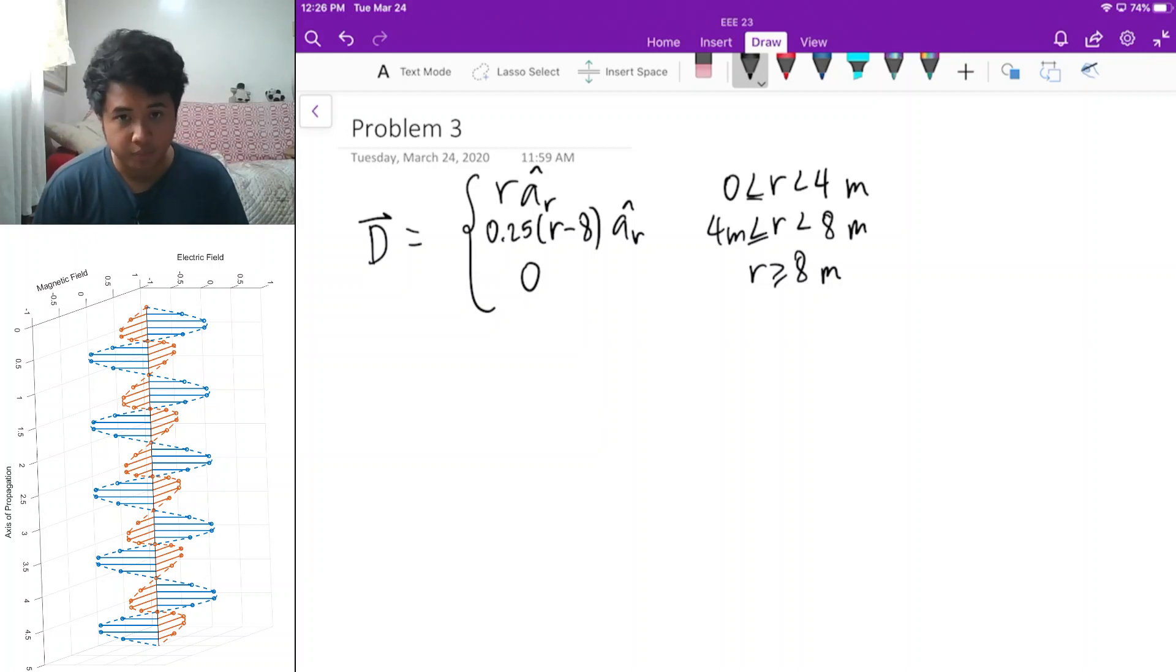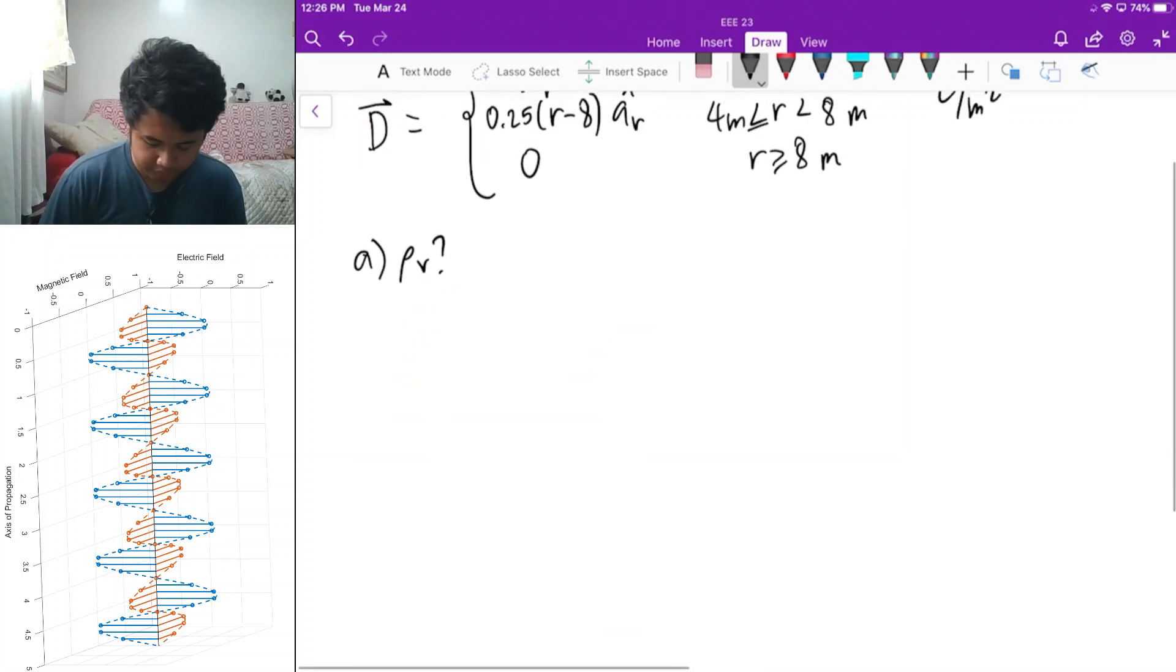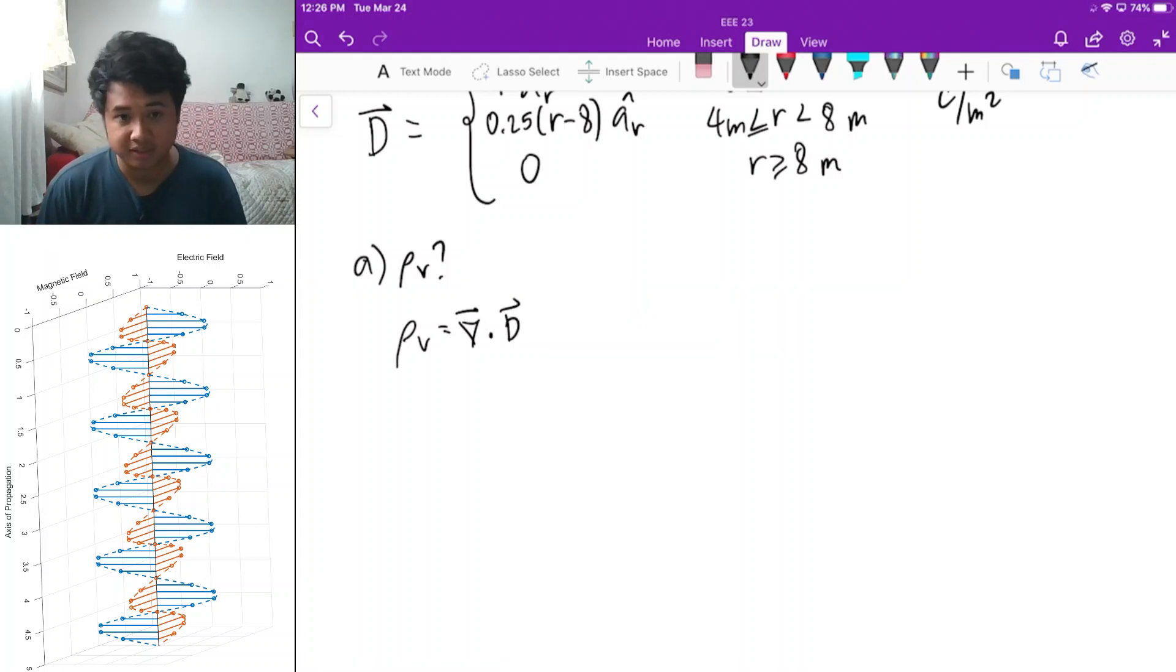For problem three, we are given an electric flux density function in coulombs per square meter. The first task is to solve for the charge distribution everywhere. What is rho v? To solve this, you'll just solve for the divergence of your electric flux density. Since the electric flux density is only a function of r, the divergence of d is solved using this formula.